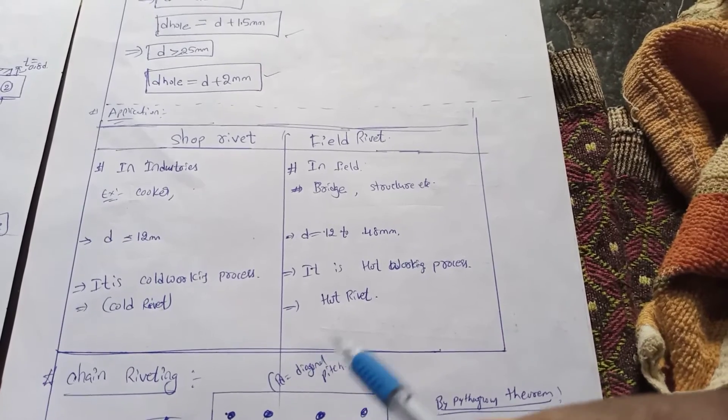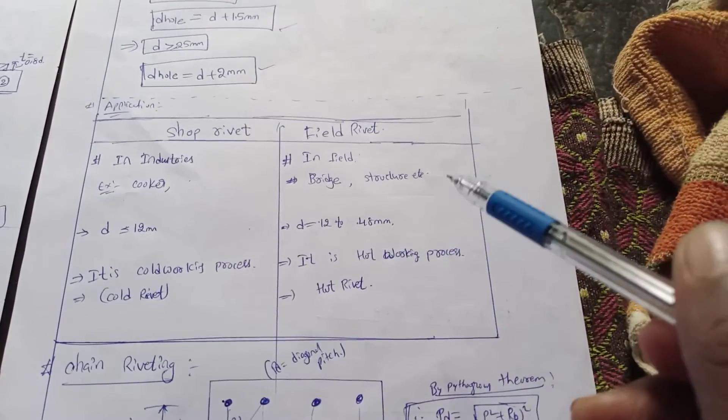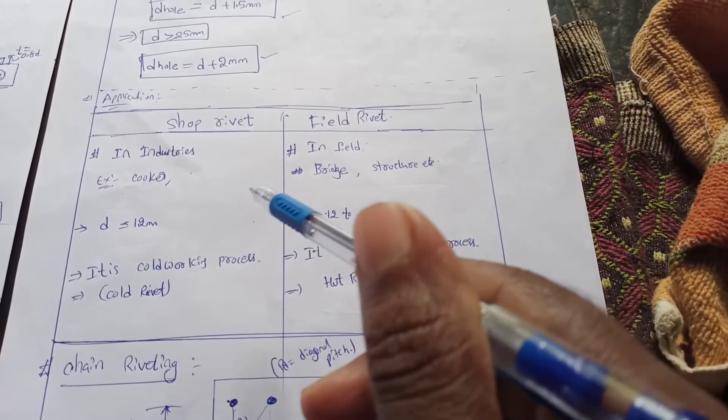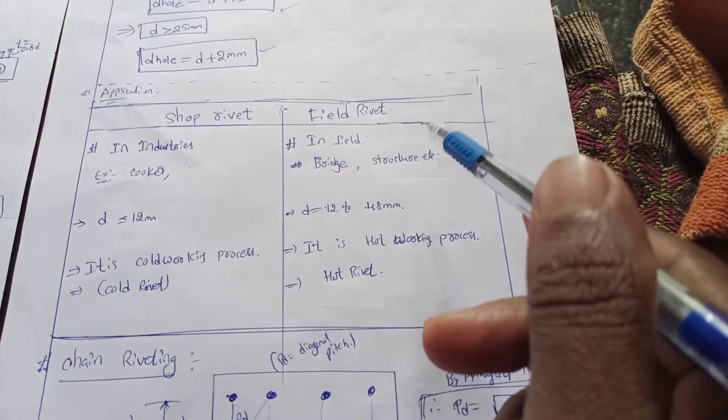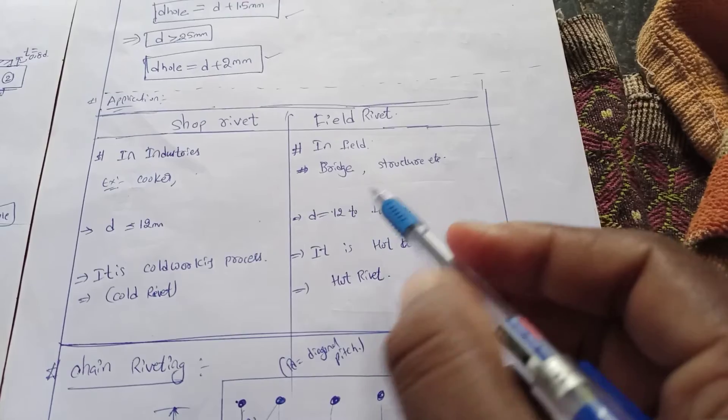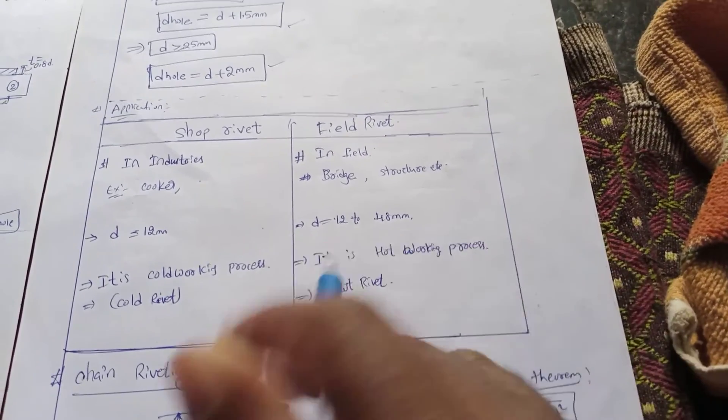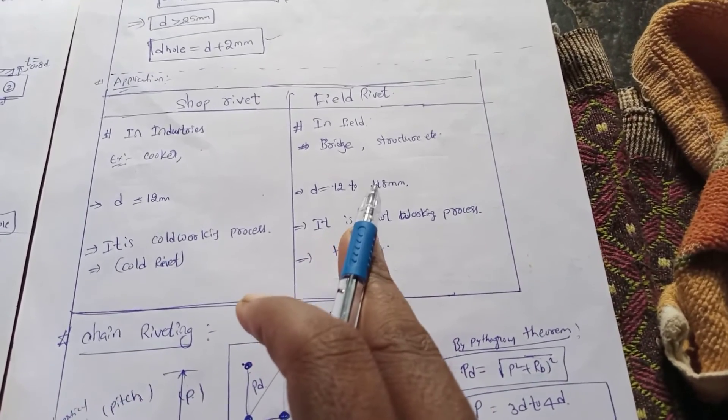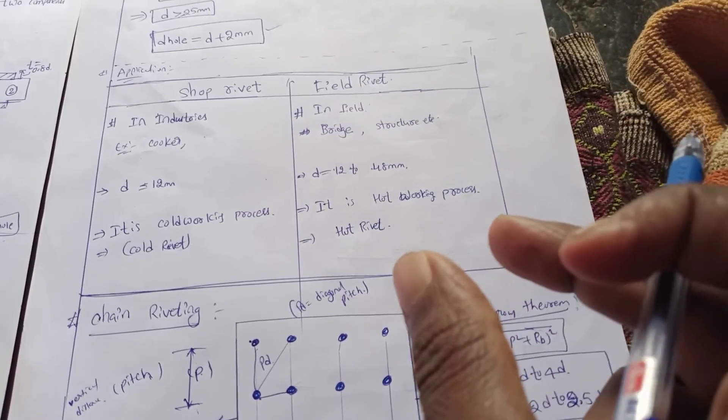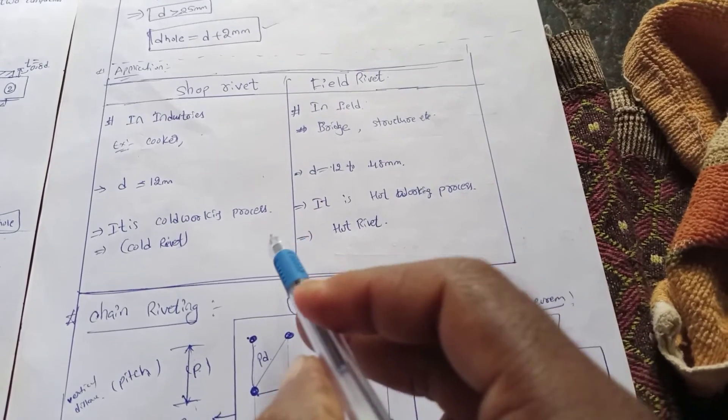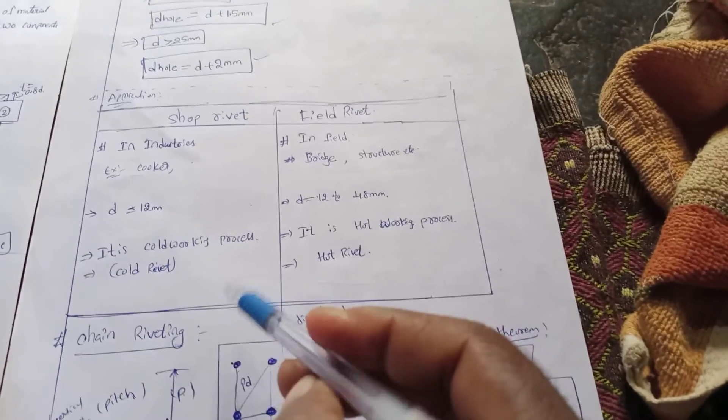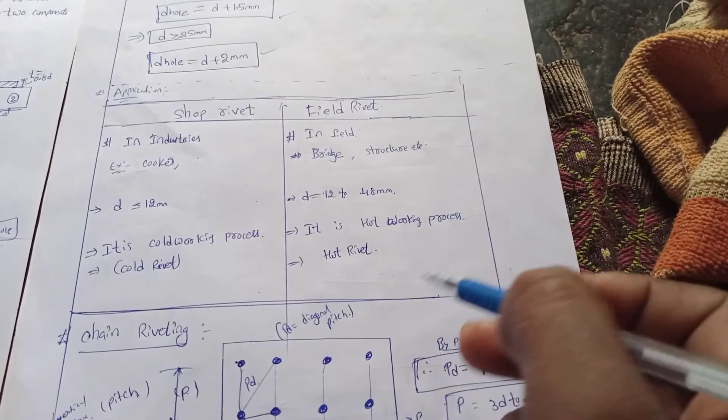For example, these are regular shop rivets and field rivets used in industries, buckets, and dams. If diameter is less than 12mm, it's cold riveting. In case it should be around 12 to 48mm, it's hot riveting. Below the recrystallization temperature is cold working process; above is hot working process.